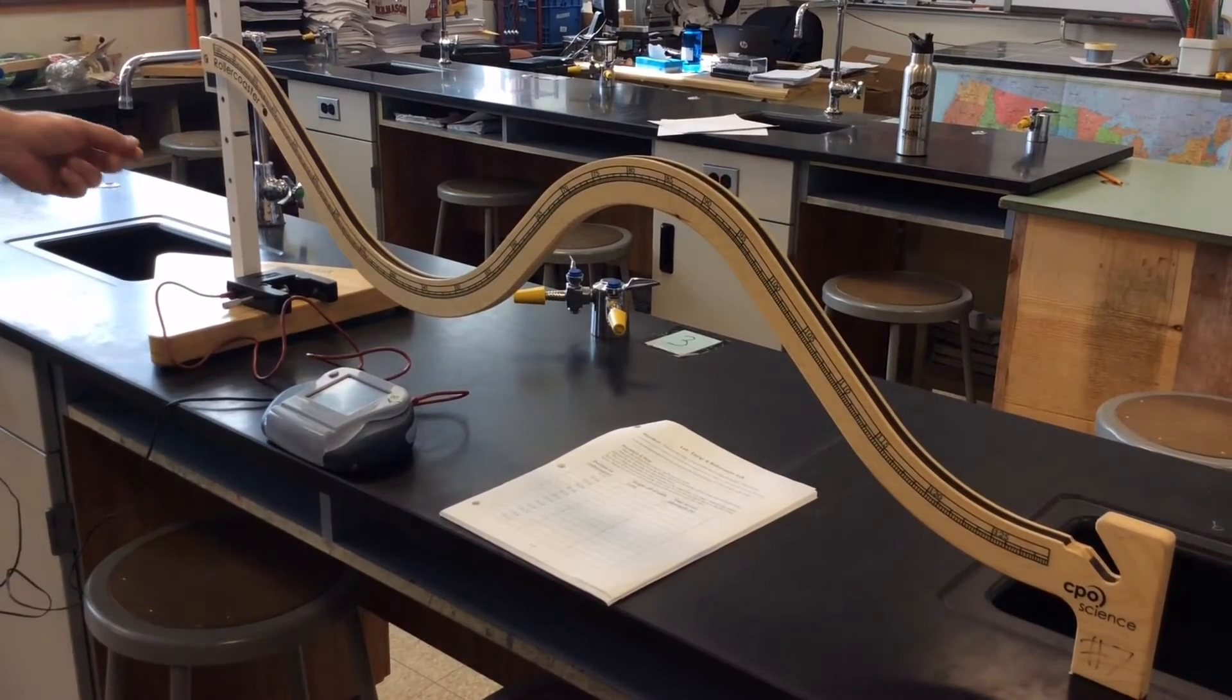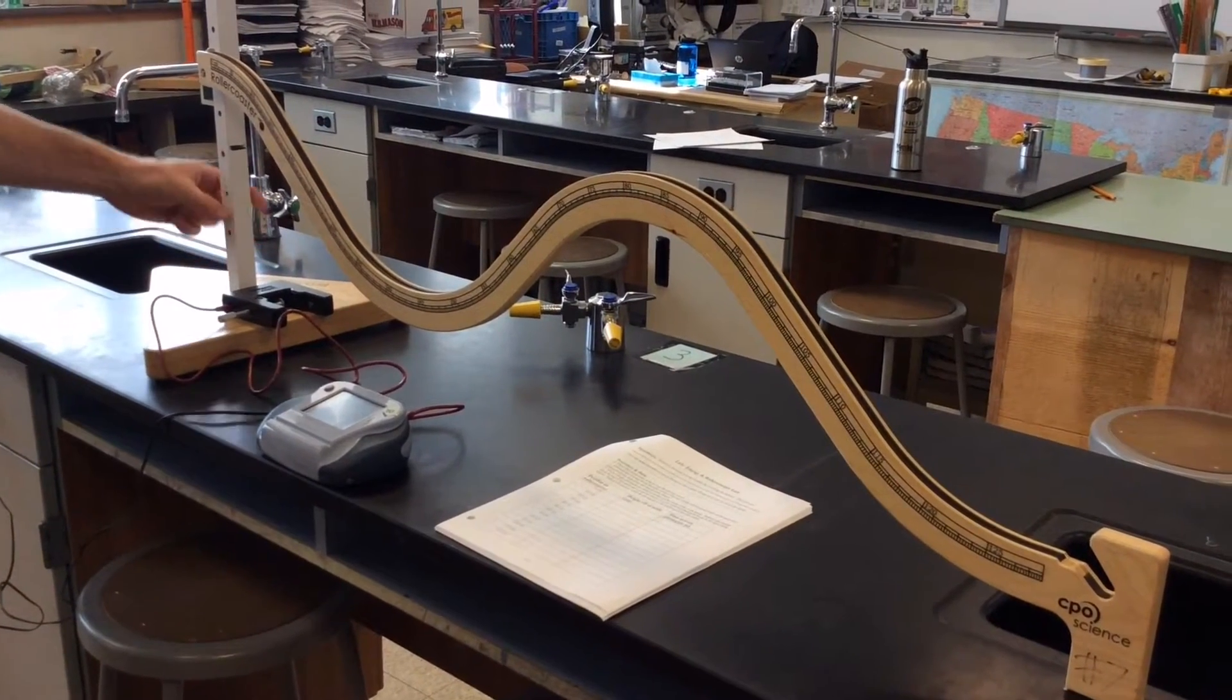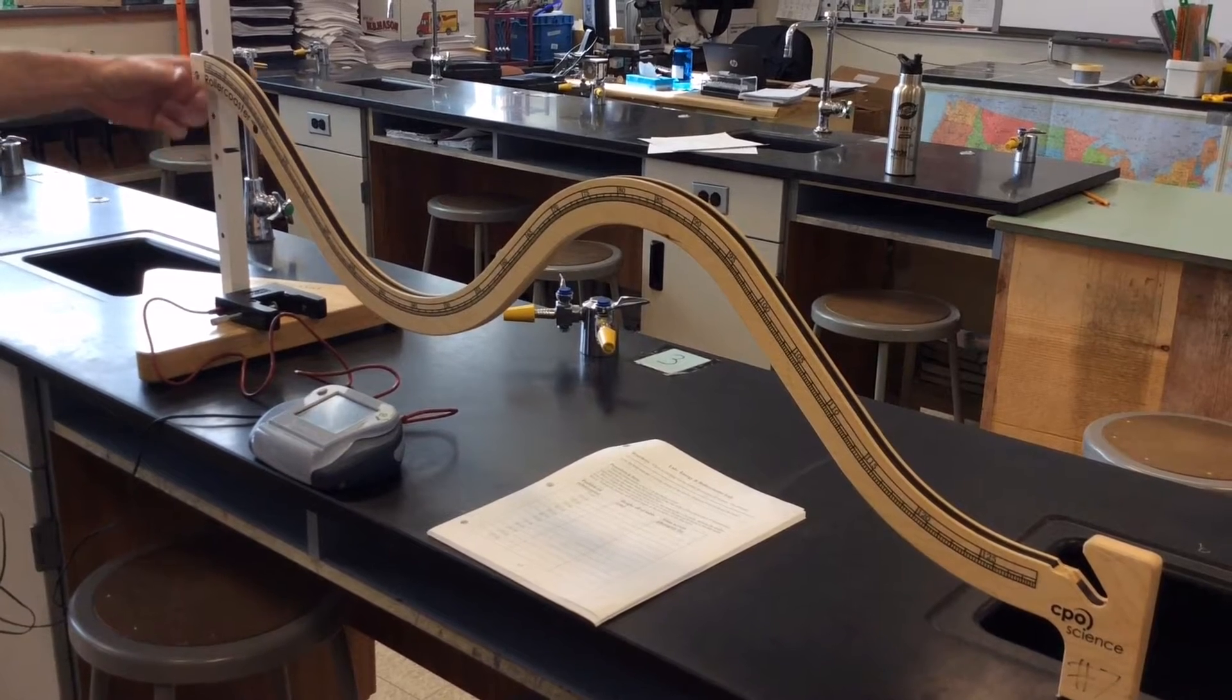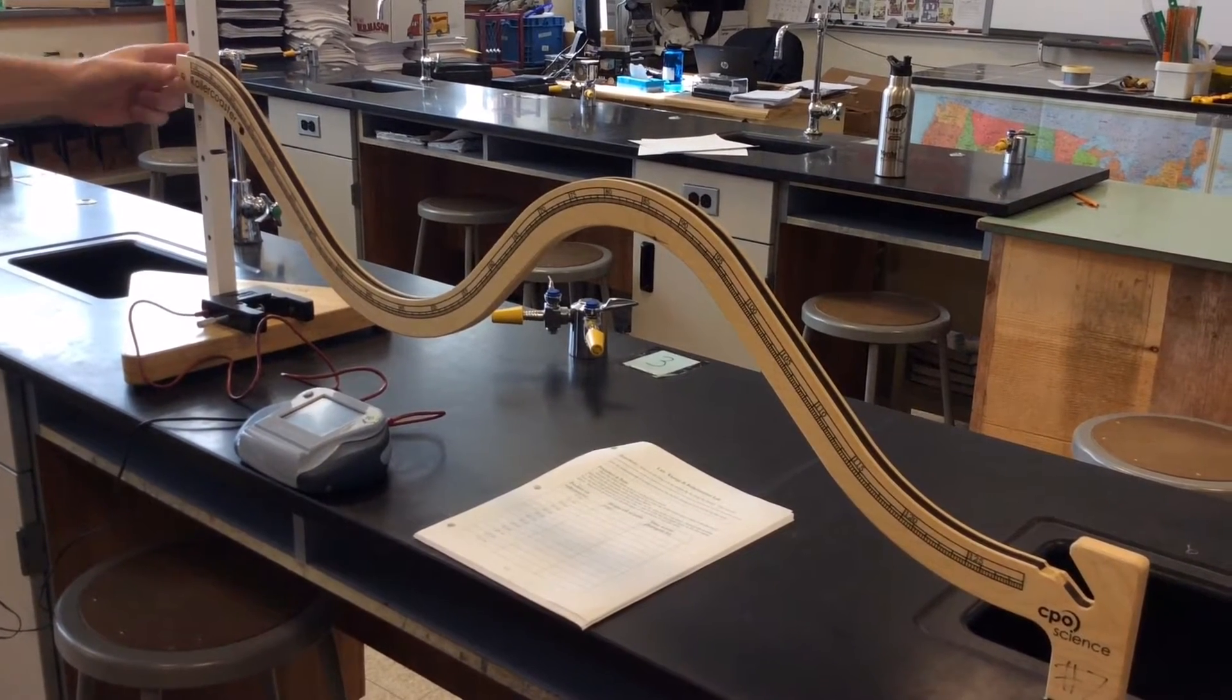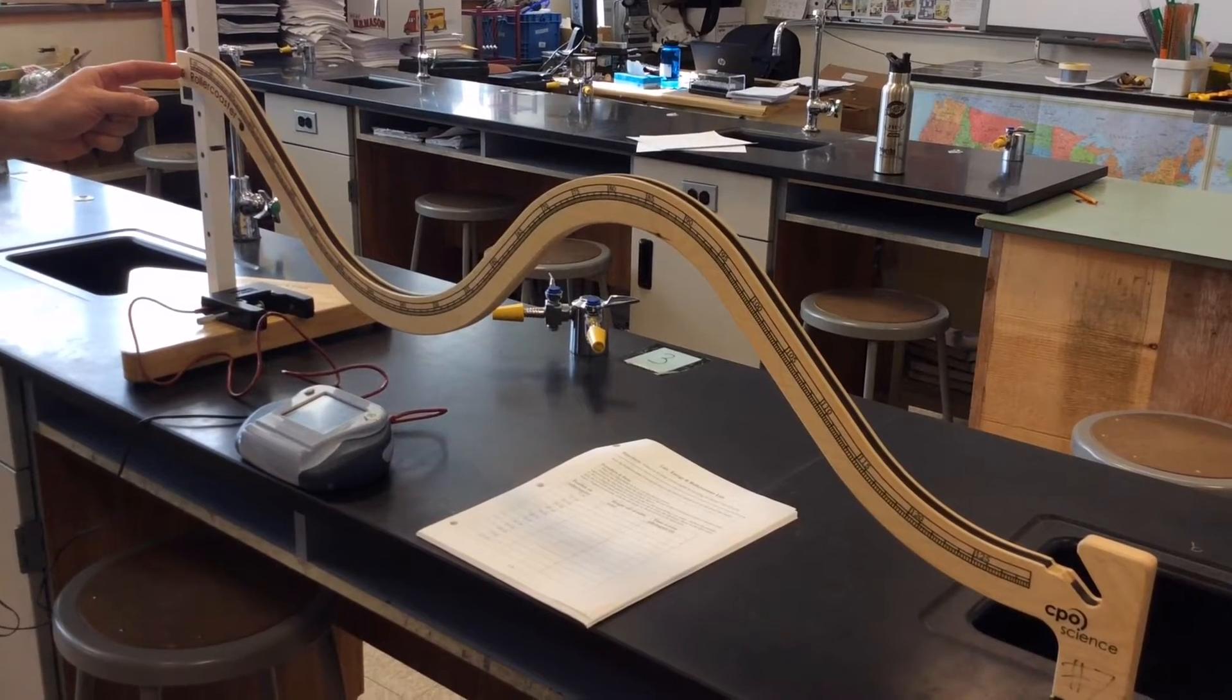You're going to be placing this ramp on hole number five, so you're going to count up five holes from the bottom of the physics stand, and you're going to put the thumb screw through the physics stand, then into the Roller Coaster Ramp.